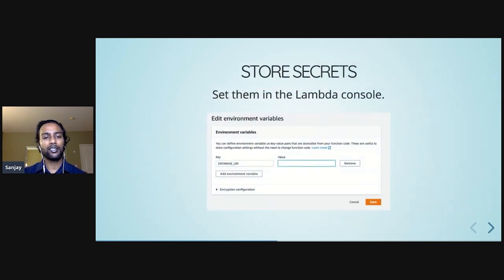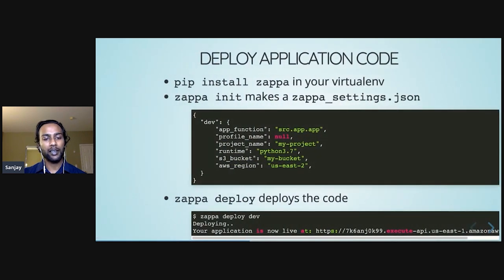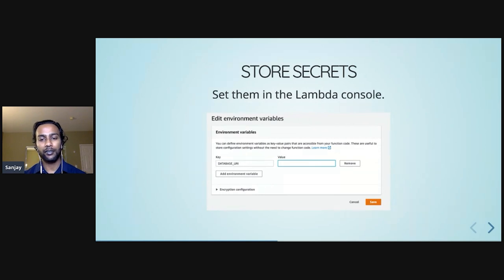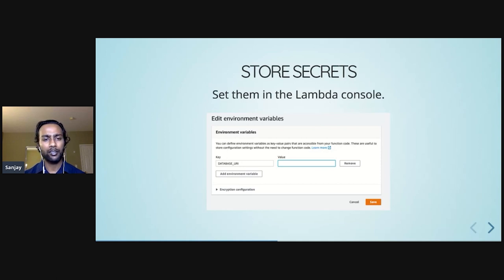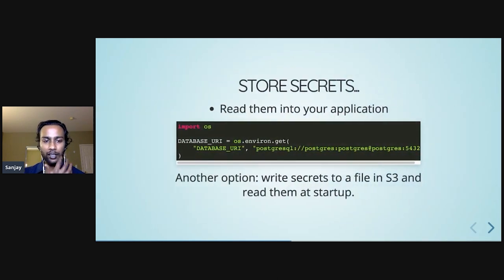By running zappa init and then zappa deploy, we can get our back-end running on the internet. But most back-ends need to talk to other services such as a database and store secrets. For storing secrets, the easiest thing is to set them as secure environment variables in the Lambda console — for example, your database connection string or password. Another option, if you have more secrets to manage programmatically, is to write them to a file in S3 and have your function read them at startup.